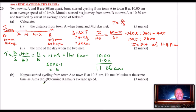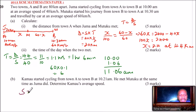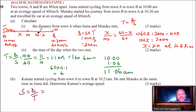Part B: Kamau started cycling from town A to town B at 10:21 a.m. He met Mutuku at the same time as Juma did. Determine Kamau's speed. Speed equals distance over time. By the time Kamau met Mutuku, he had covered 44 kilometers — the same meeting point.